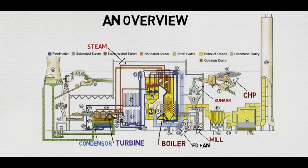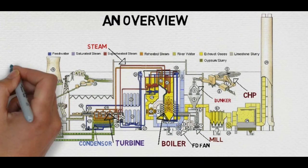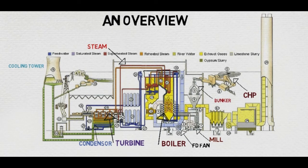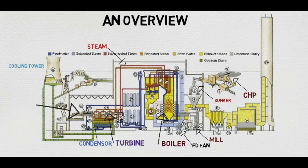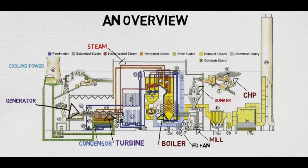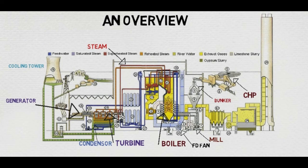The rest of the steam from the turbine is collected into the condenser, where the steam is condensed by the cold water which is coming from the cooling tower. As the turbine rotates, it also rotates the generator, and as the generator rotates, it produces electricity.